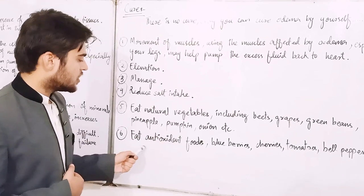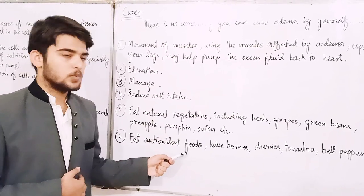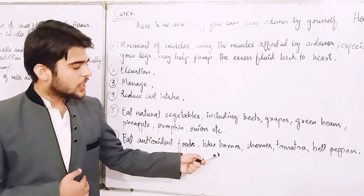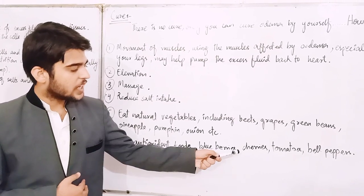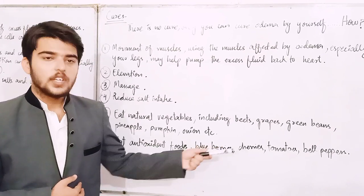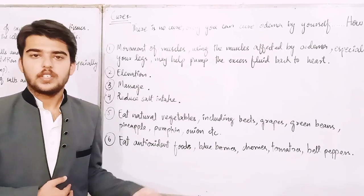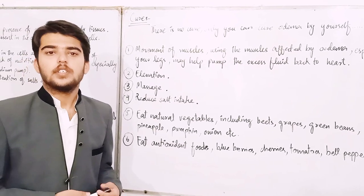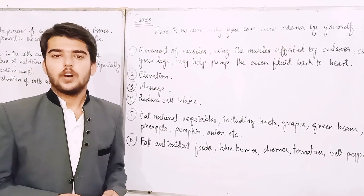Number six, eat antioxidant foods, for example blueberries, cherries, tomatoes, bell peppers, etc. So this is the lecture for today. I hope you got it.